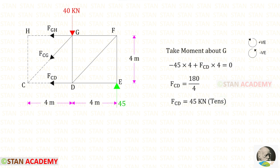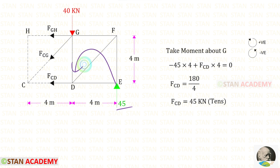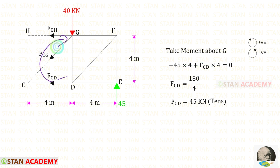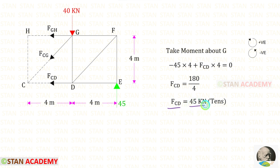Now I am going to find FCD. To find FCD, we can take moment about G. When we take moment about G, we do not need to consider FGH, FCG, and the 40 kN load. The remaining forces are FCD and 45. The 45 kN reaction is acting anticlockwise so it is negative with distance 4. For FCD, we get a positive value, meaning it is tensile.